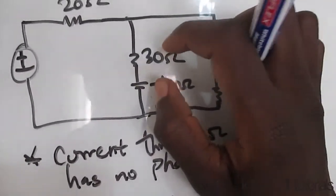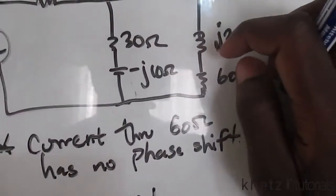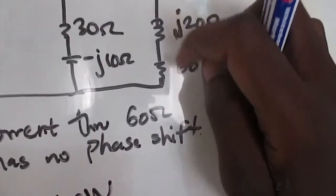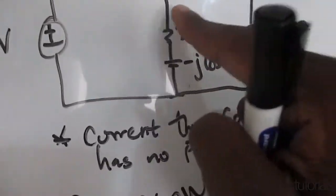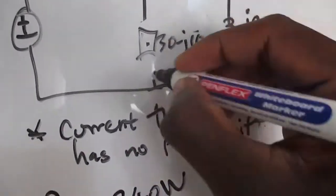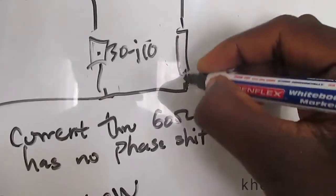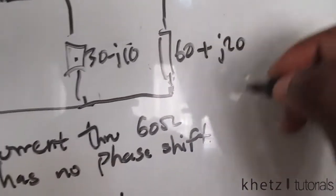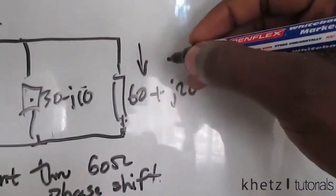Let's start by finding the value of this voltage source. We'll begin by combining the two impedances. We're going to combine the two impedances along the same line: we have 30 minus j10 on one branch, and 60 plus j20 on the other branch.